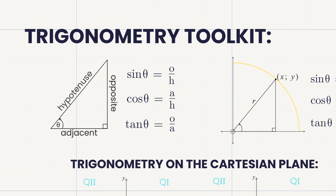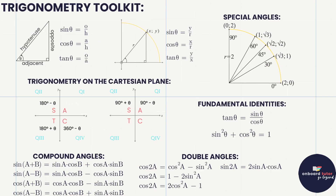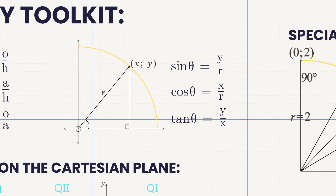The first thing we did was learn about the trig ratios — SOHCAHTOA — and this is still true when we are solving right-angled triangles. Then we moved on and looked at trigonometry on the Cartesian plane, where we saw that we can write SOHCAHTOA in terms of x, y, and r, and that helps us solve Pythagoras-type questions.